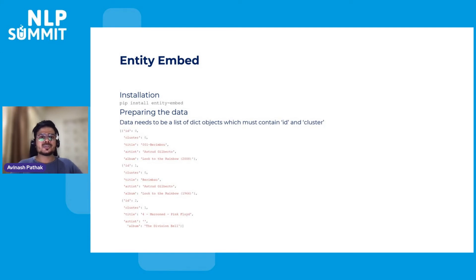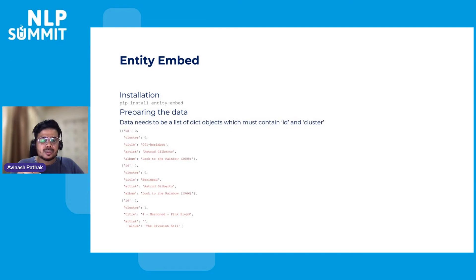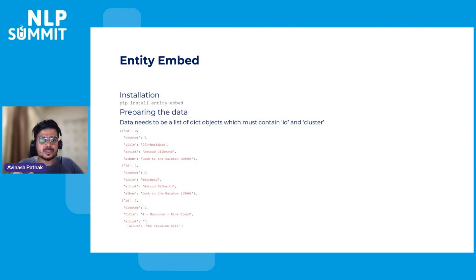Next, I'll look at a tool called entity embed. Installation is simple: pip install entity-embed. Entity embed expects data in a certain format — a list of dictionary objects which must contain ID and cluster. You can see three examples of dictionaries here, with IDs 0, 1, and 2. ID uniquely identifies a particular entity and cluster indicates which entities are duplicates. The first two entities have cluster value 0, meaning they are duplicates of each other, while the third entity has cluster value 1, meaning it is not a duplicate of the first.